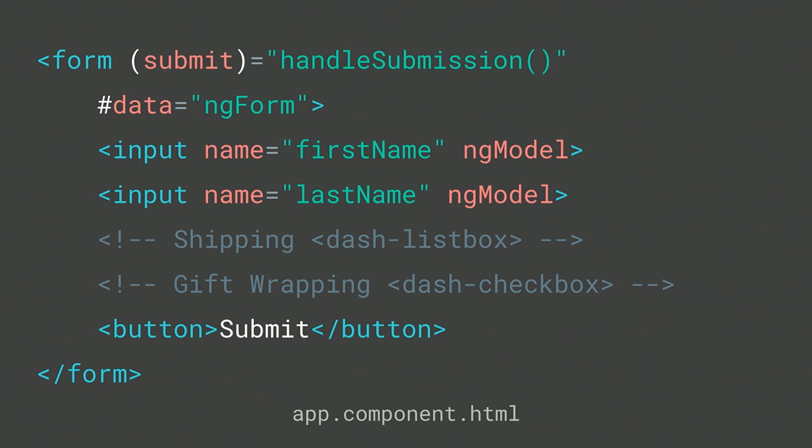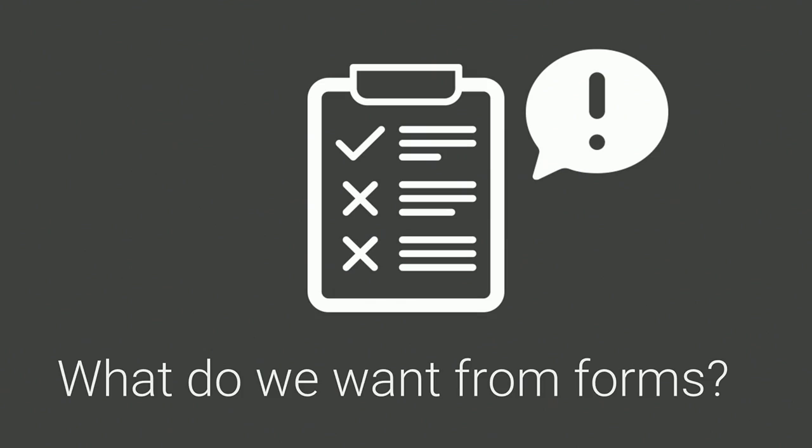For our simple Angular form, we have a submit event using parentheses binding, ng-forms assigned to a variable, and HTML input tags with ngModel directives that wire up the form. We'll be adding the shipping web component and the gift-wrapping web component. As a user, we want to turn forms from a one-way data dump into a conversation. One problem with web components today is you have to wire up forms yourself — but because Angular already does that rewiring, we can include web components in that model very easily.